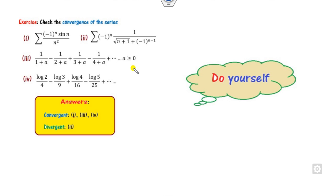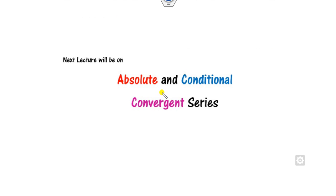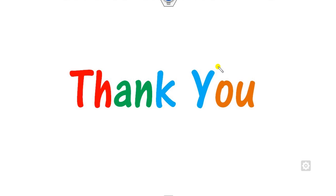Some questions are given as exercises for you to solve yourself. These four questions have answers provided, and some more questions are given for you to try using the Leibniz test, so that you can understand this concept more clearly. We will see the next lecture on absolute and conditional convergent series. Till then, please like, share, and comment on these videos. Best of luck, students.